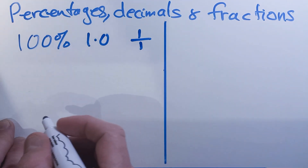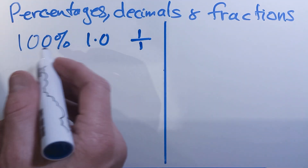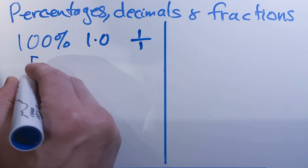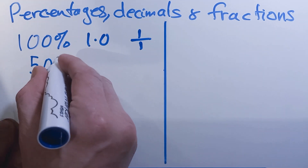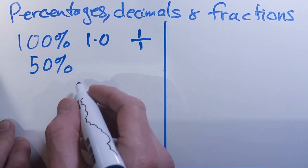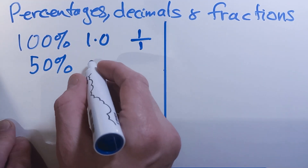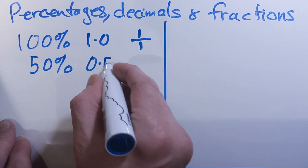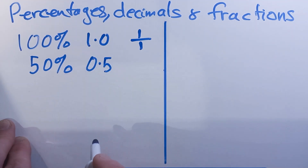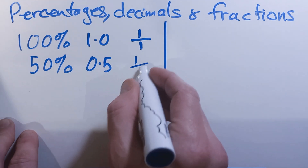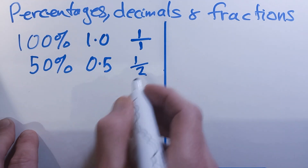Now, if we think of something else — what would half of 100% be? Well, we'd have 50%. And hopefully you'll know that that's equal to 0.5. And as a fraction, we can write that as 1 over 2.